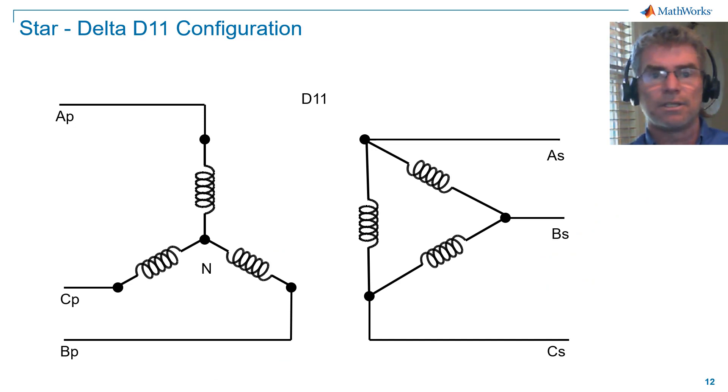Here is a D11 configuration. If we look at the voltage across AB on the primary and the voltage across AB on the secondary, and form the clock face, then the secondary line voltage points to, you've guessed it, 11. Hence D11.